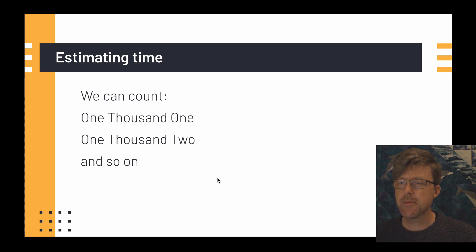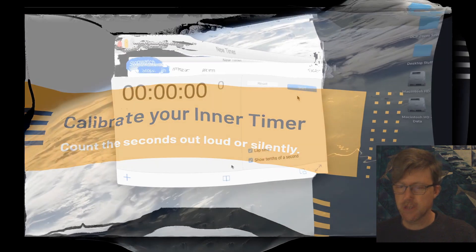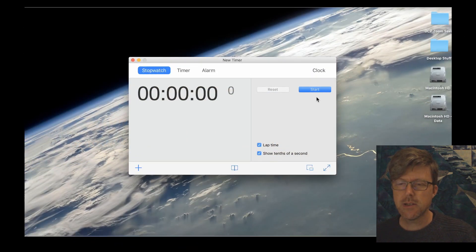And for estimating time, I already mentioned this, we can count 1,001, 1,002, and so on. So we're going to actually practice that right now. I'm going to start the timer. And we're just going to go for about 10 seconds. And I'd like you to count 1,001, 1,002, and just watch the timer and make sure that you're right on your timing. So you're calibrating your inner timer. Here we go. And go.